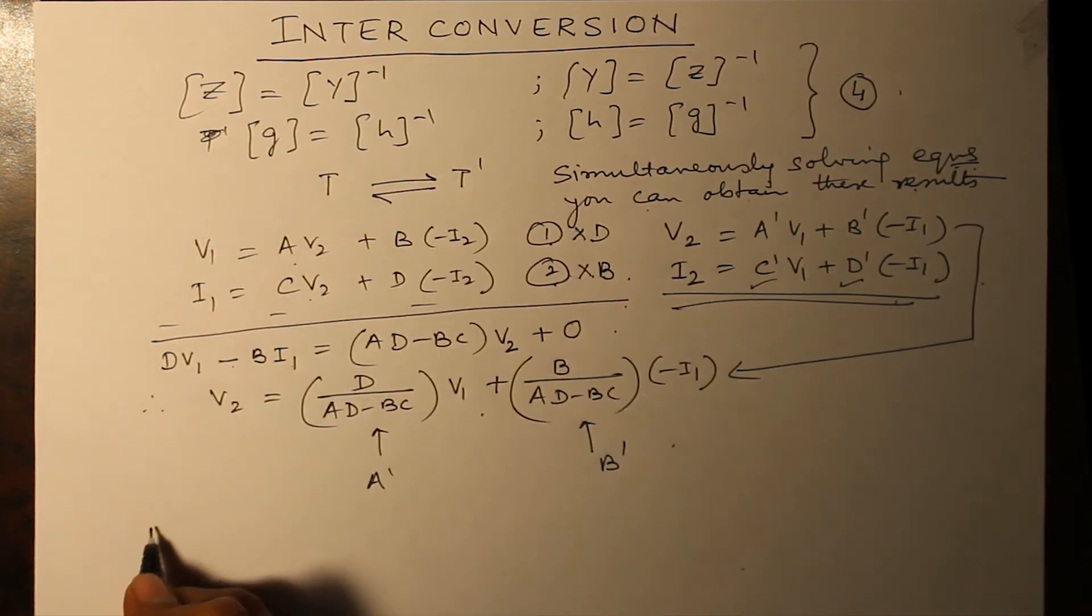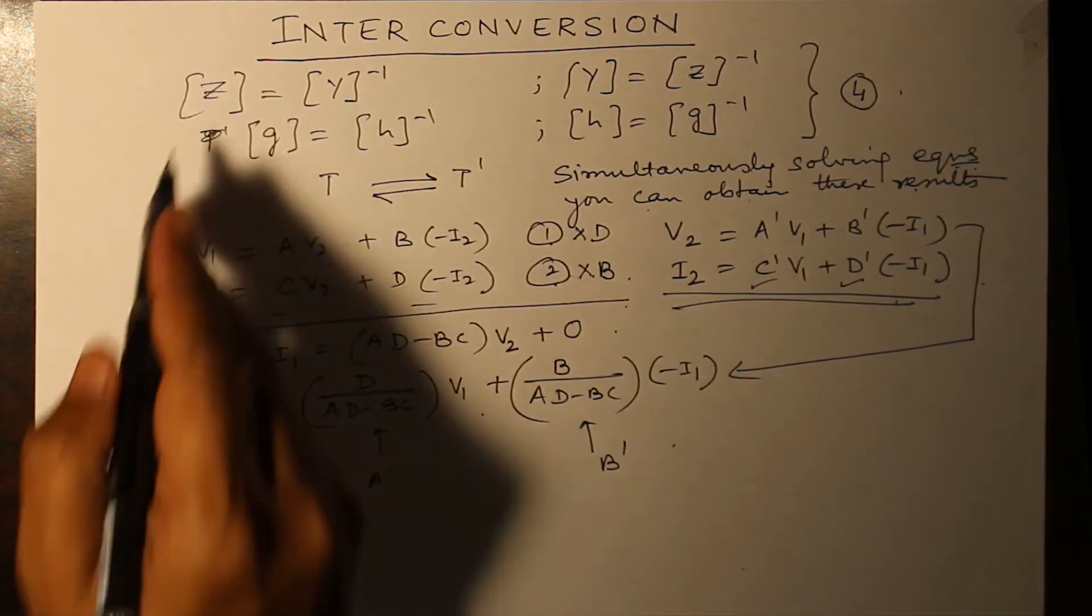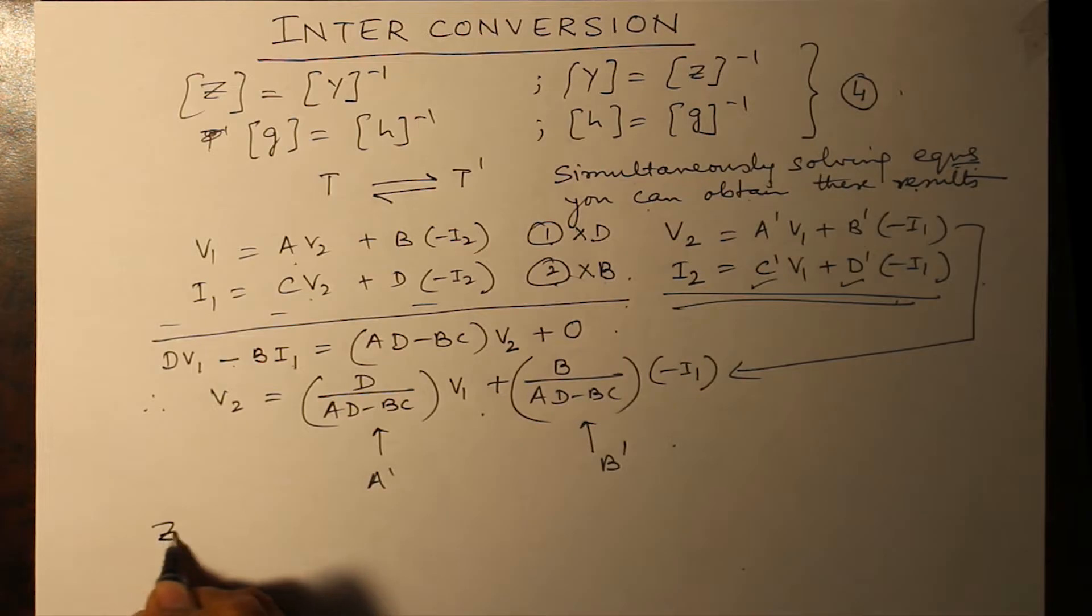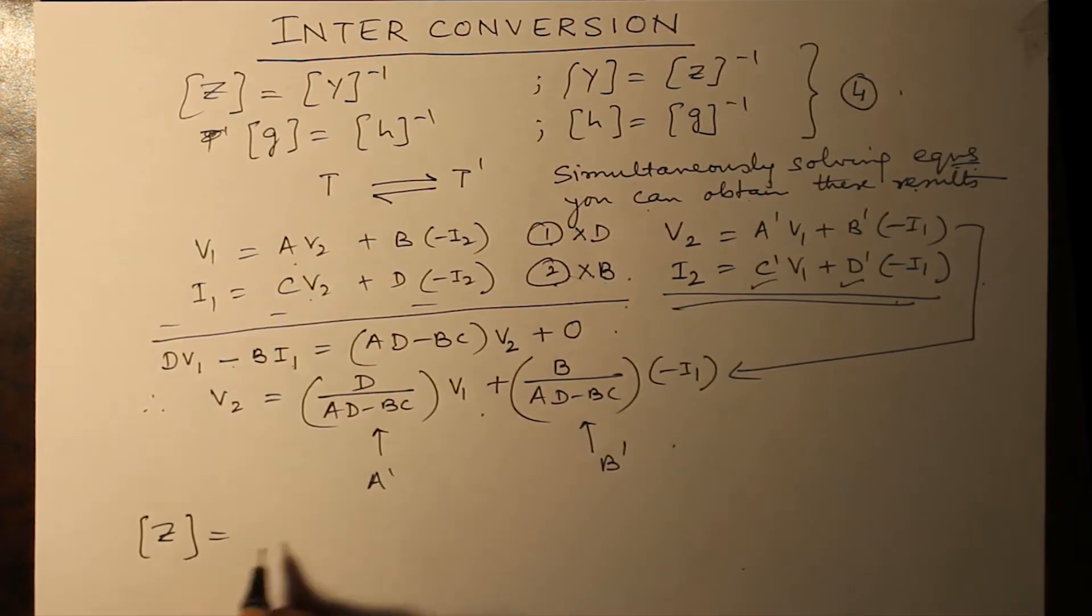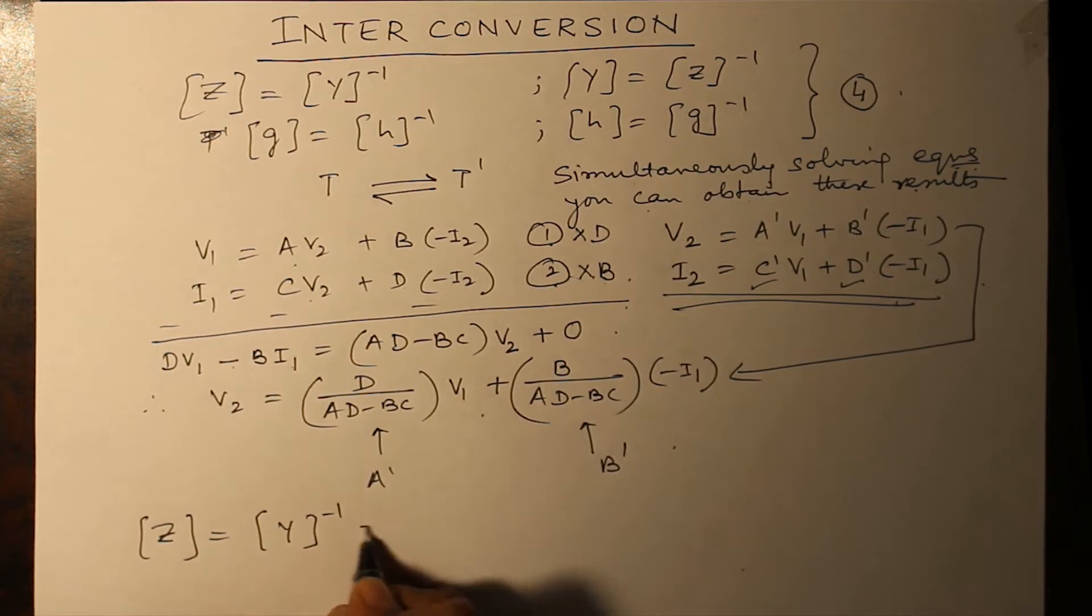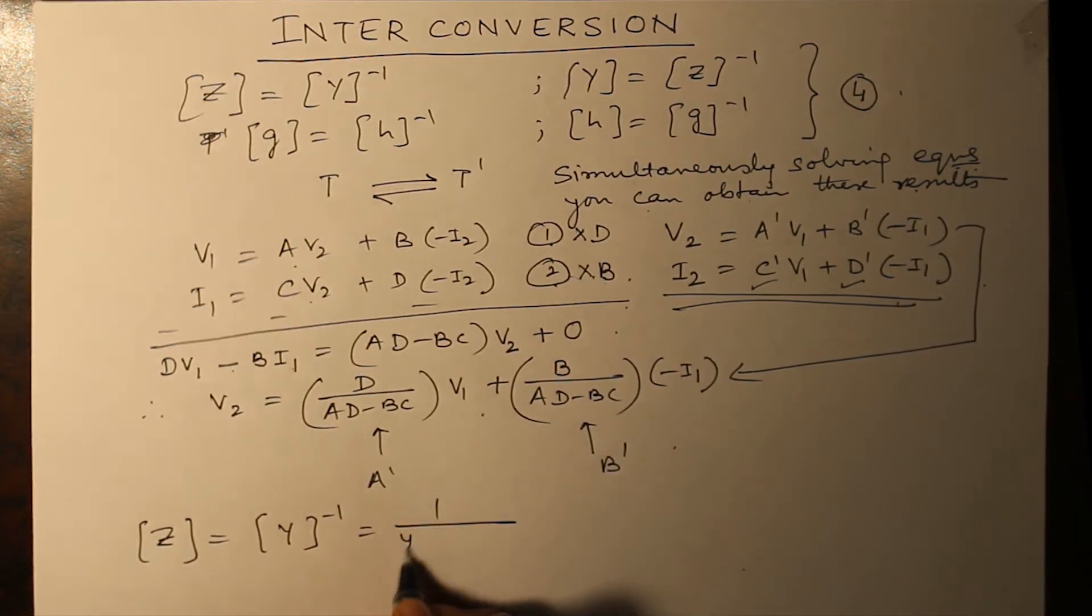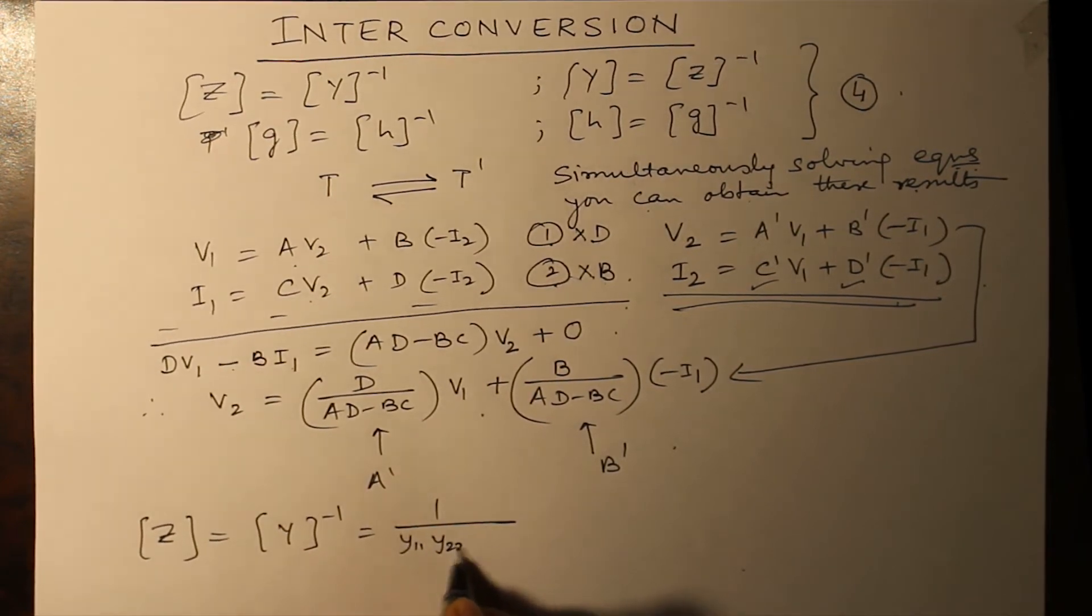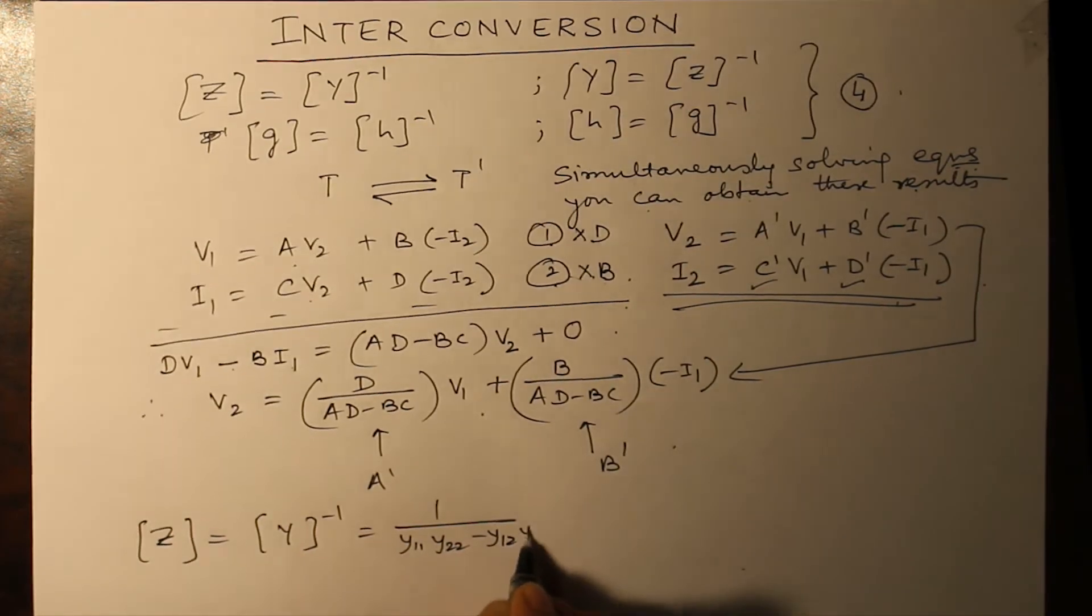Let us suppose you want Z parameter from Y parameter. So that is equal to Y parameter inverse, which is equal to one over Y11 Y22 minus Y12 Y21.